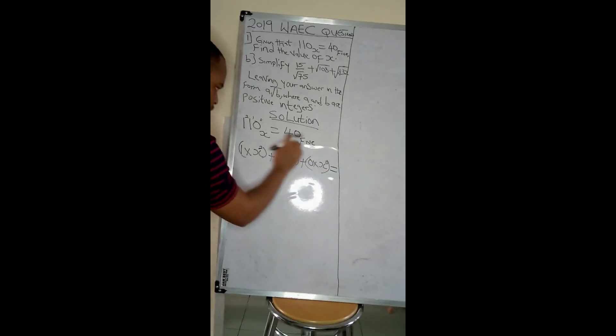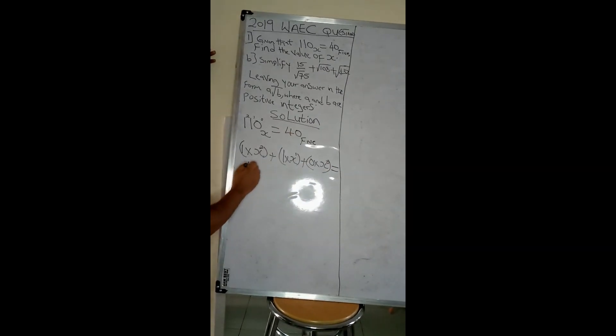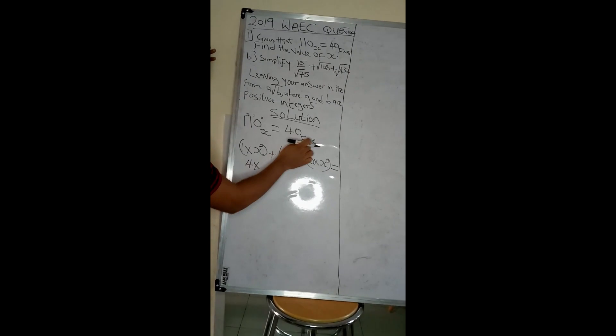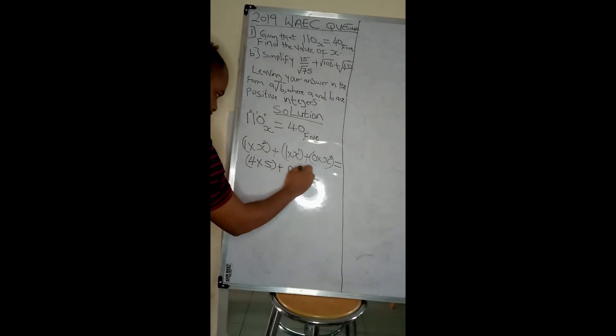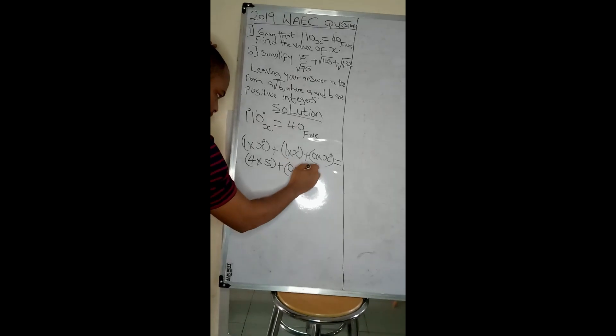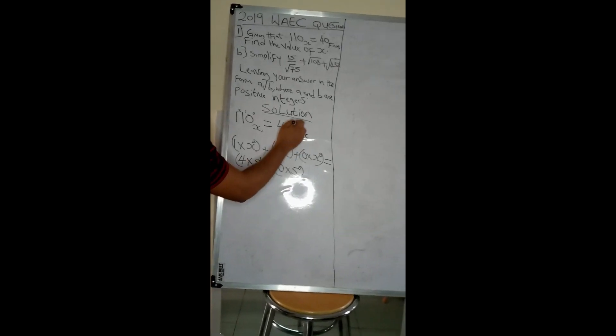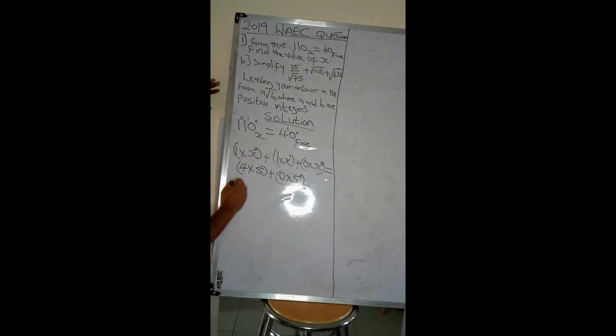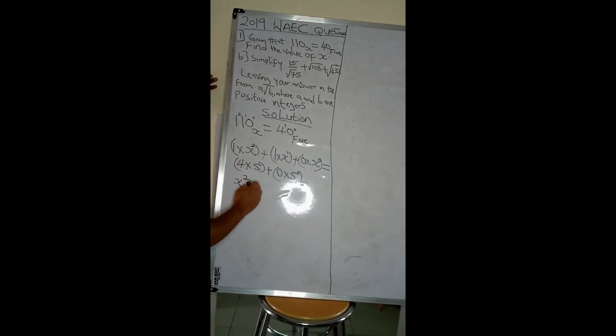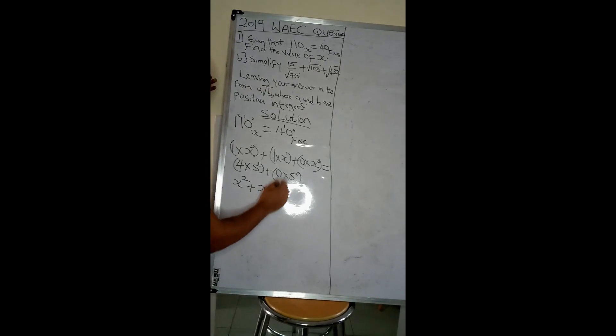Then equals, convert this also to base 10: 4 times 5 plus 0 times 5. This is power 0, power 1. Let's expand this. 1 times x to the power of 2 is x squared plus x plus 0. x to the power of 0 is 1, so 0 times any number is 0.